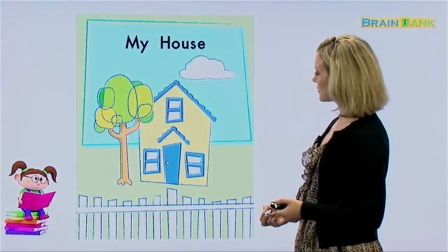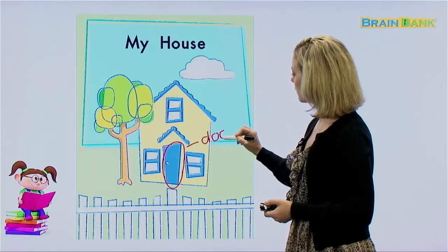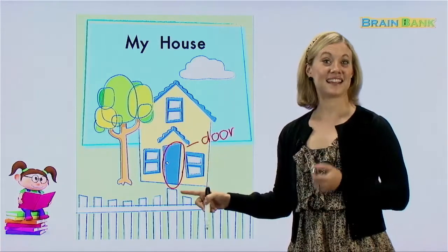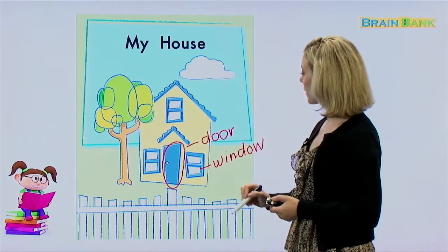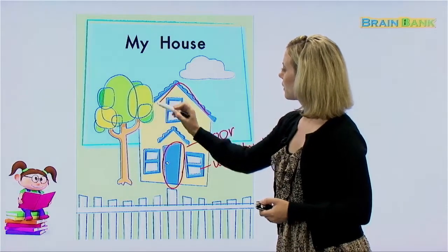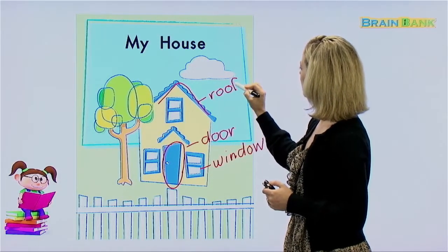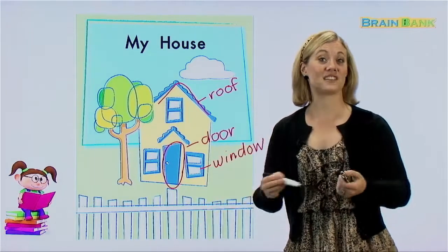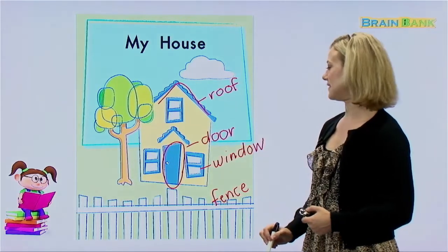Can we name some of the parts of the house? What is this right here? Yes, that is called a door. And then we see three — what do we call these? Yes, those are called windows. There are three windows that we can see on this house. And what do we call this part of the house, the top over our heads? Yes, that is called a roof. A roof. Very good. And does anyone know what this is called? Sometimes people have these around their houses. Yes, this is called a fence.